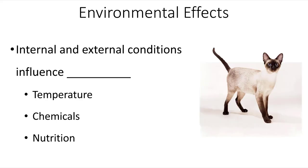Both internal and external conditions can influence phenotype, including temperature, chemicals, and nutrition. Here we see a picture of a Siamese cat. The distinctive coat patterning of a Siamese cat is because the enzyme which makes the brown or black pigment is not active at normal body temperatures. So it's only those areas of the cat that have lower temperature that actually have that darker fur color.